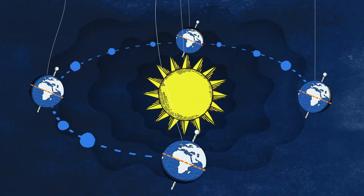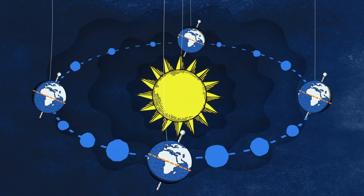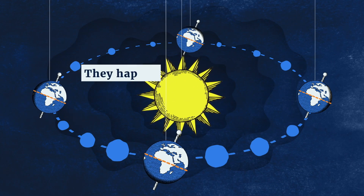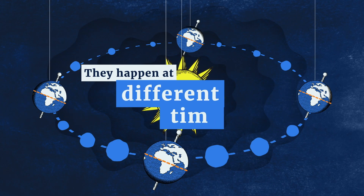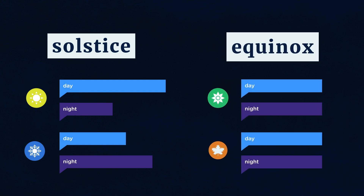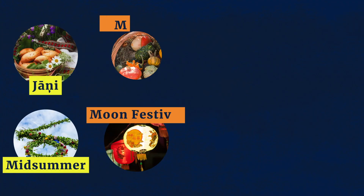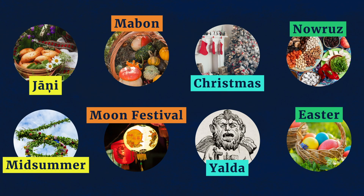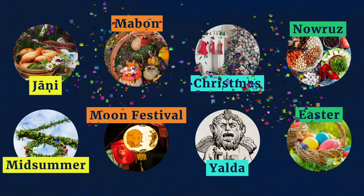So at the end of the day, while solstices and equinoxes are related, they happen at different times of the year. Just remember that solstices are the longest and shortest days of the year, while equinoxes occur when the day and night are equally as long. Regardless of whether it's a solstice or an equinox, there's bound to be a celebration happening somewhere.